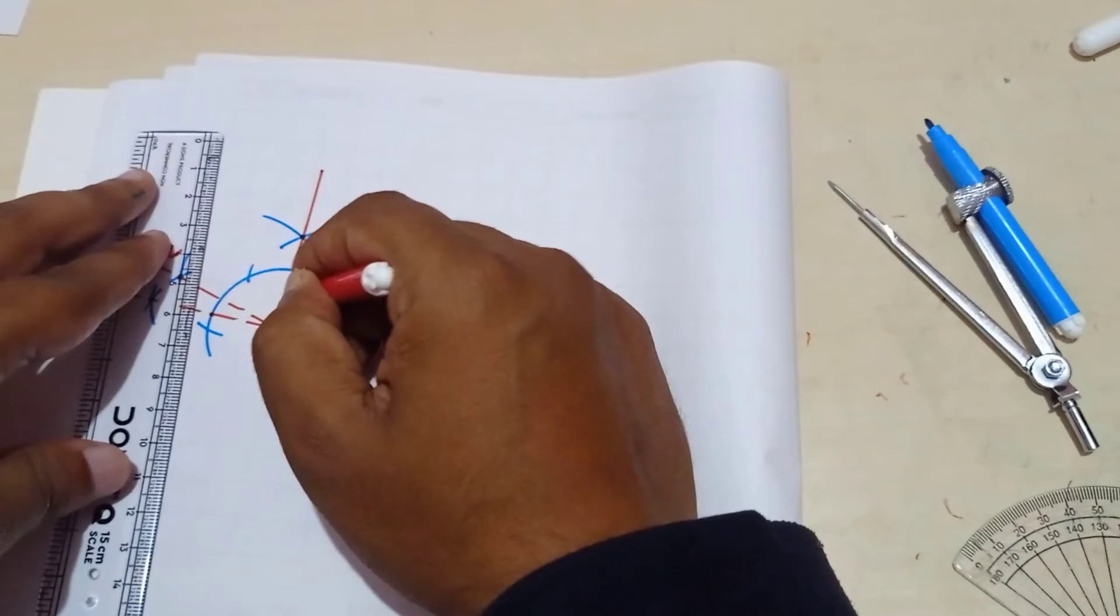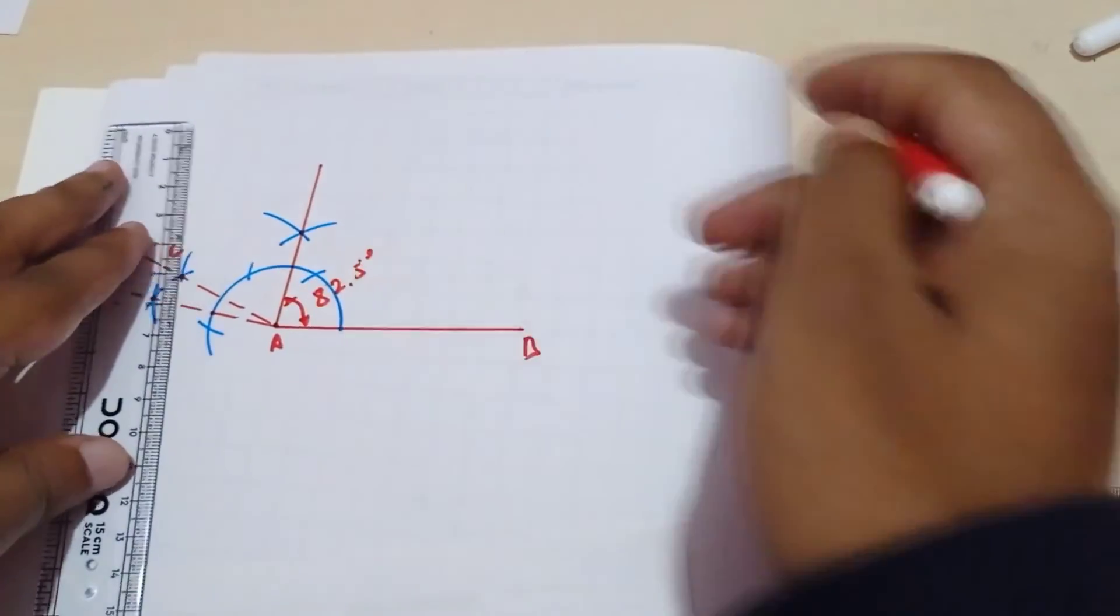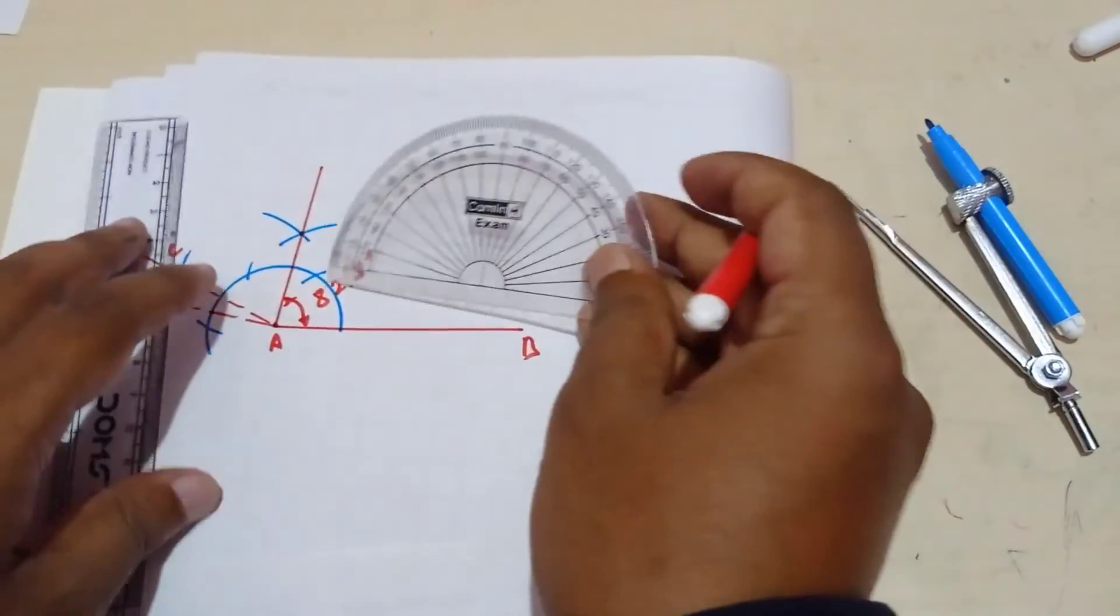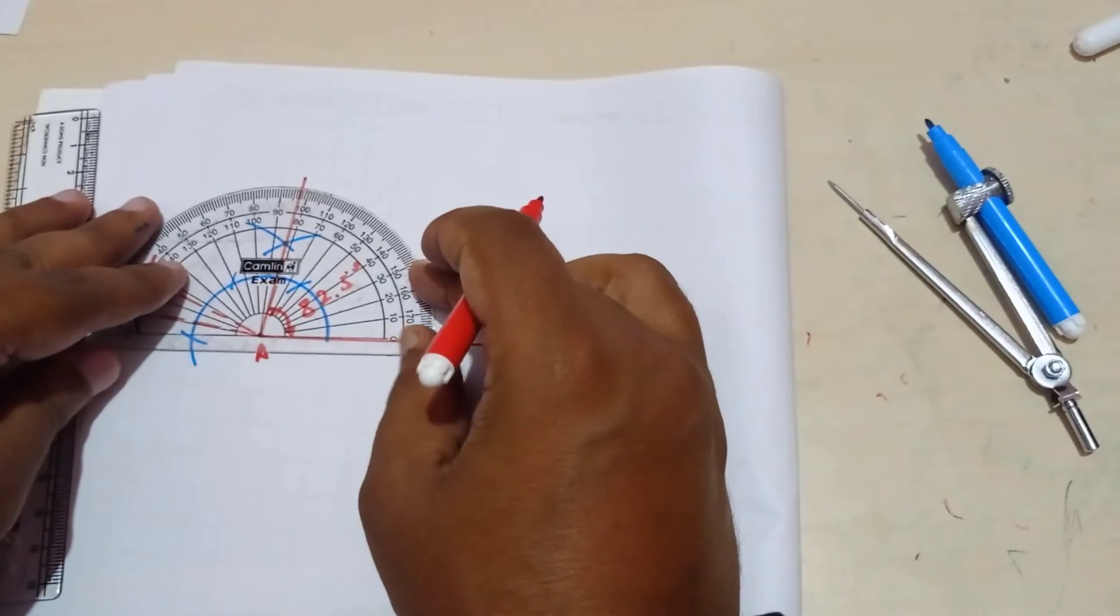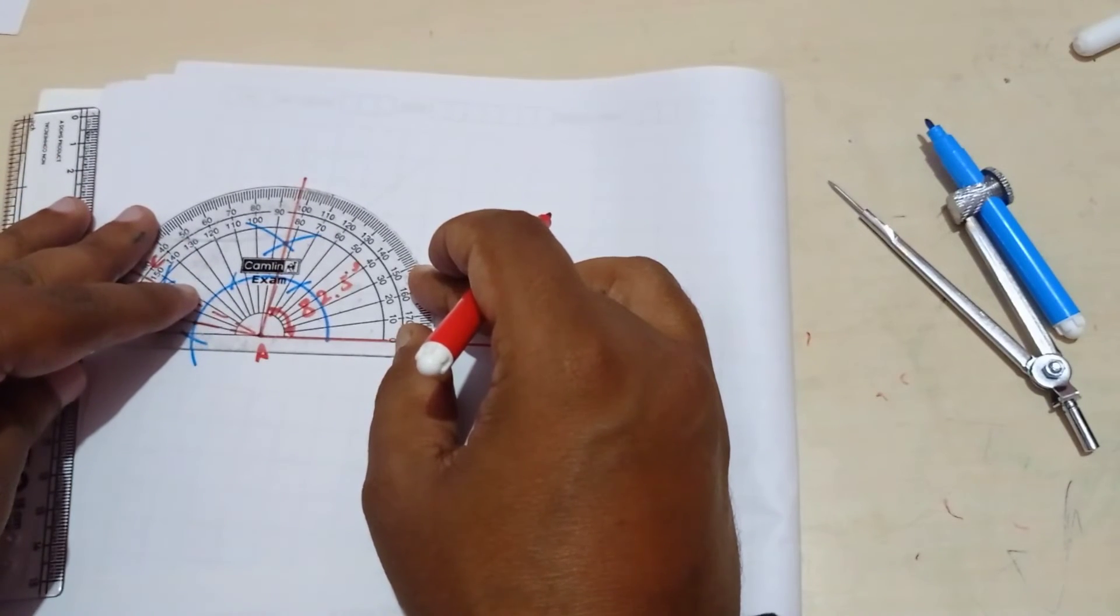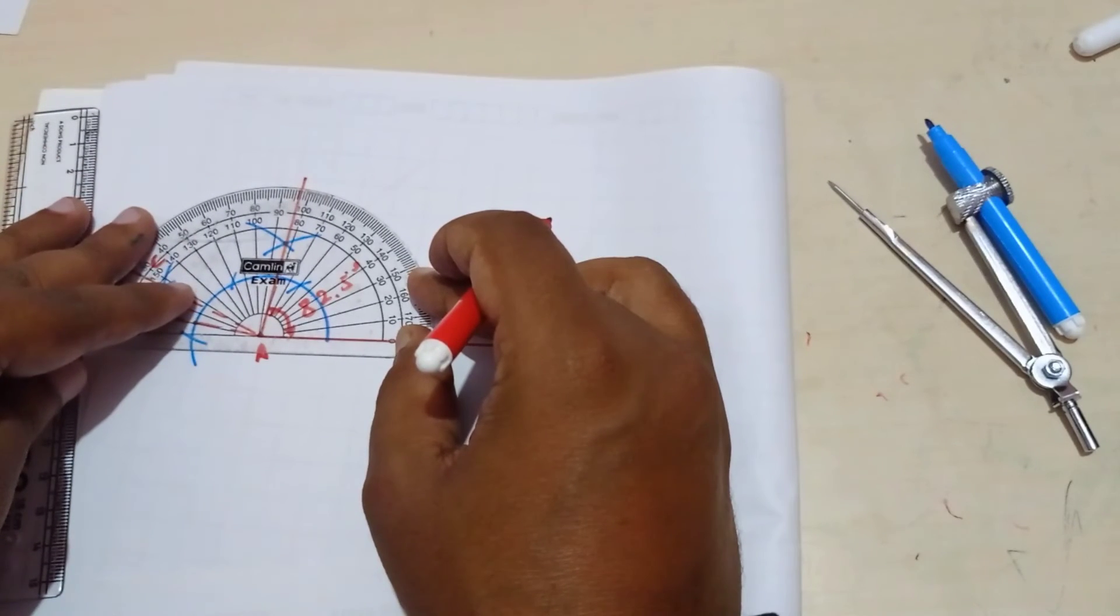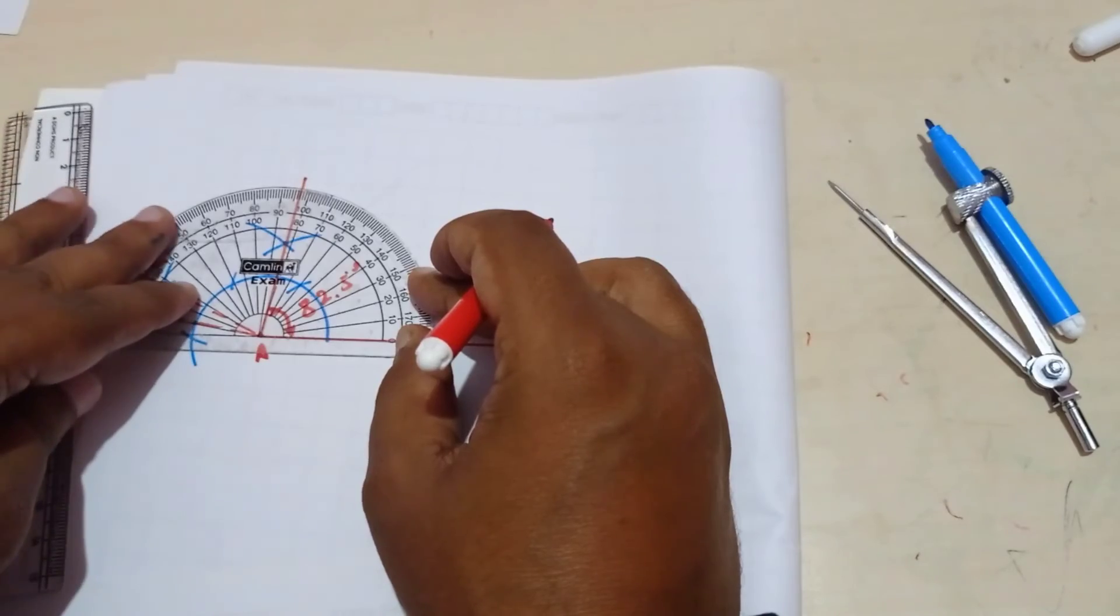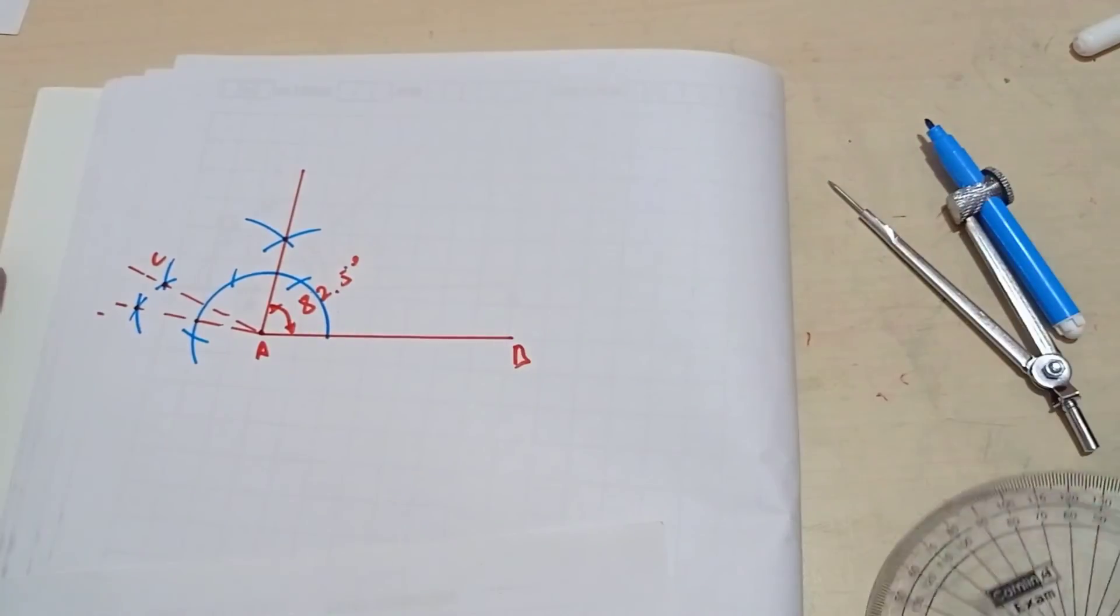Now we check this is 82.5 degrees. So we are going to cross check it. You can see exactly you are getting an angle of 82.5 degrees. So that completes the problem.